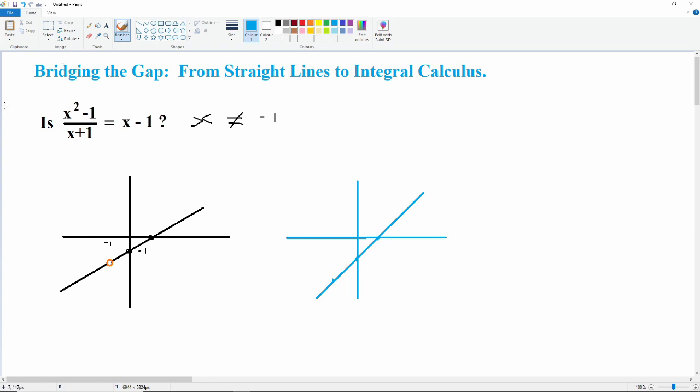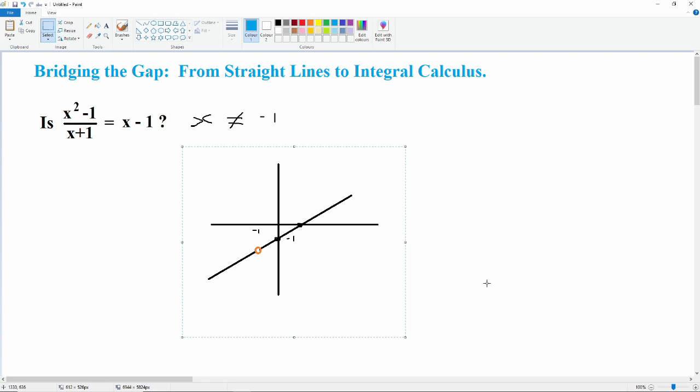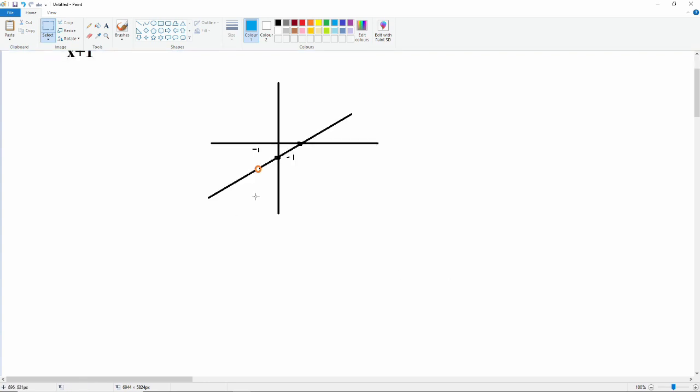So now let's look at this graph in a bit more detail. What happens when x is very, very close to minus 1 but not exactly minus 1?